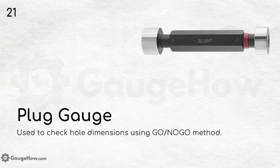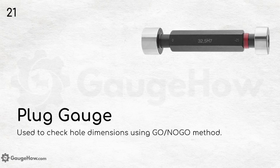Plug gauge. Used to check hole dimensions using the go or no-go method. The go/no-go method is a decision-making process used in manufacturing, engineering, project management and quality control. If a criteria should proceed, you use 'go'; if it must be stopped, you use 'no go'. It is widely used for quality inspection.